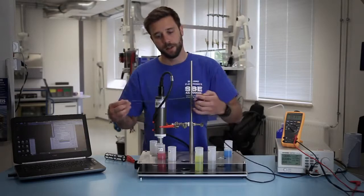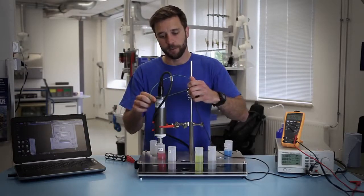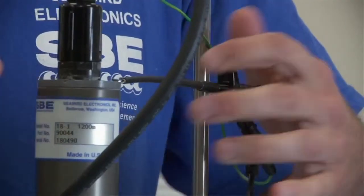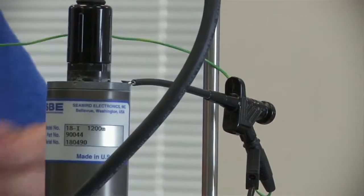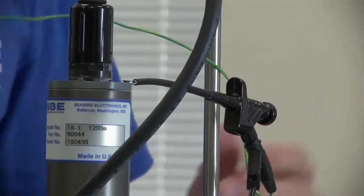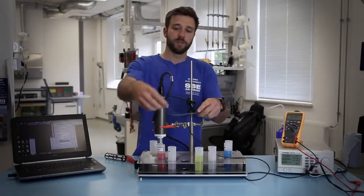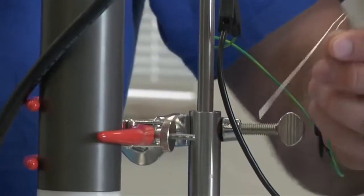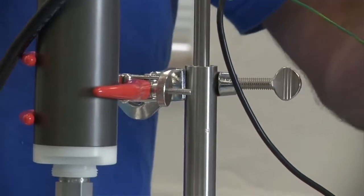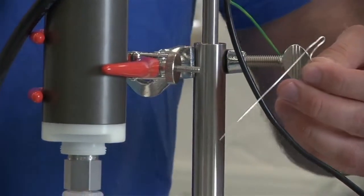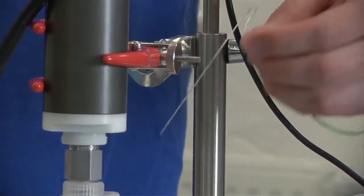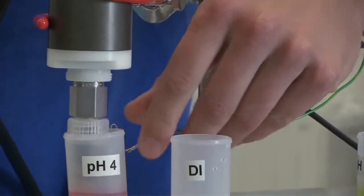This is normally done when the sensor is in the water as a circuit is formed between the housing of the instrument and the probe and the seawater. But since we're doing this on the bench we need to create that ground loop using a piece of stripped bus wire that connects to an anode screw on the housing and into the solution itself.